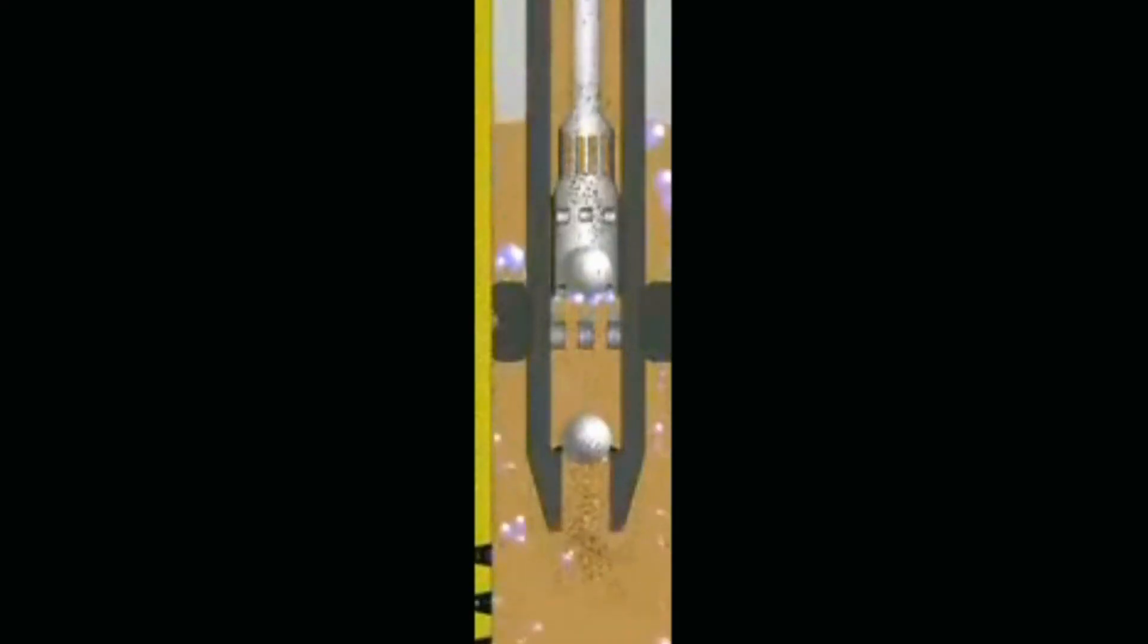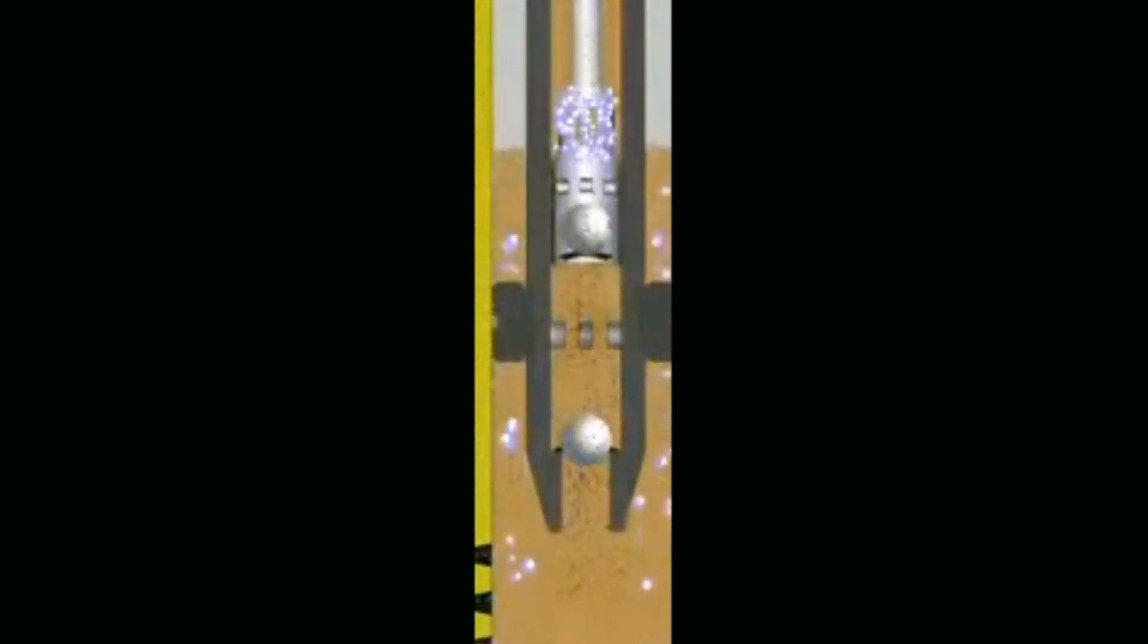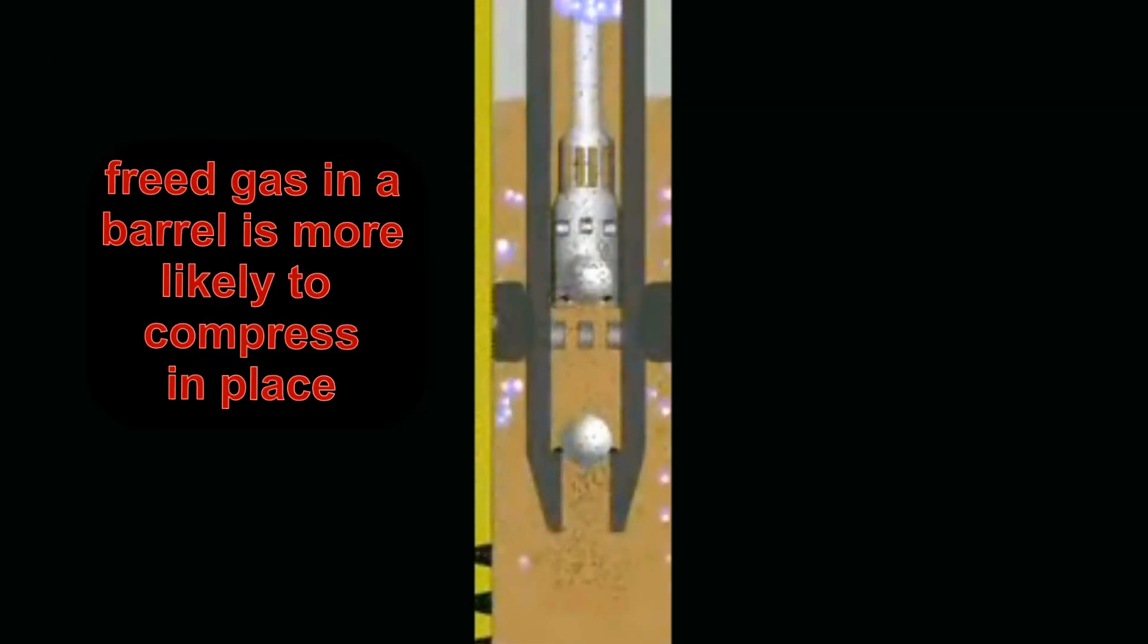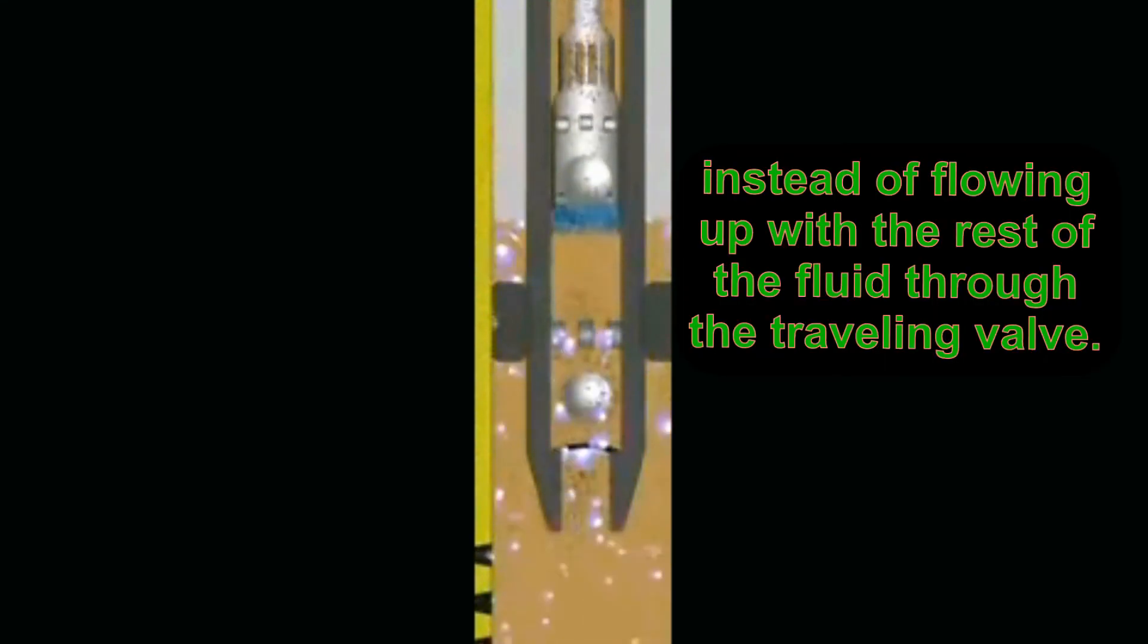Another obstacle that needs to be addressed in the sucker rod pumping system occurs when free gas is present in the reservoir fluids. Just adjusting the pumping rates, either manually or automatically, of a sucker rod pump is not enough when gas is present. Let's look at free gas inside the barrel of a sucker rod pump to see why. As the plunger drops, free gas in a barrel is more likely to compress in place instead of flowing up with the rest of the fluid through the traveling valve on its way to the surface.